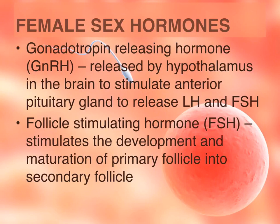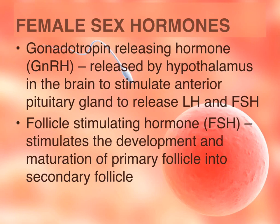The same sex hormones that regulate the male reproductive organs regulate the female, though their functions differ slightly. The gonadotropin-releasing hormone is released by the hypothalamus and stimulates the release of luteinizing hormone and follicle-stimulating hormone from the pituitary. In females, follicle-stimulating hormone stimulates the ovaries to begin maturation and oogenesis — starting the primary follicle, which becomes the secondary follicle, and so on through the whole process.